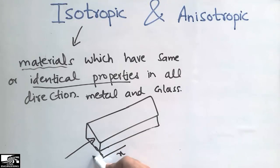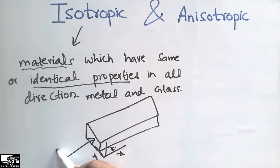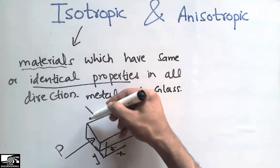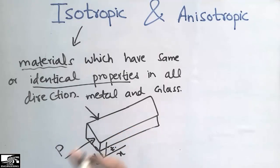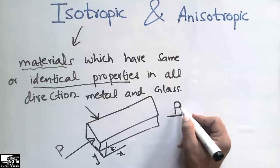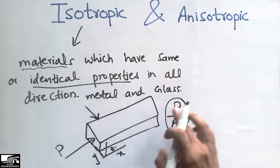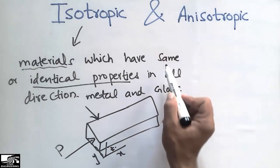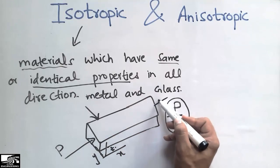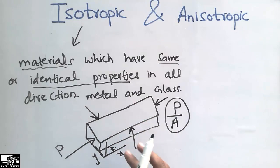When the load is applied in the x direction or in the y direction, this material has the same properties. For example, they have the same strength. If I divide the load by the area of the object, we get the stress value, and this stress does not depend upon the load direction. Whether a load is applied in this direction or that direction, they possess the same properties in all directions.